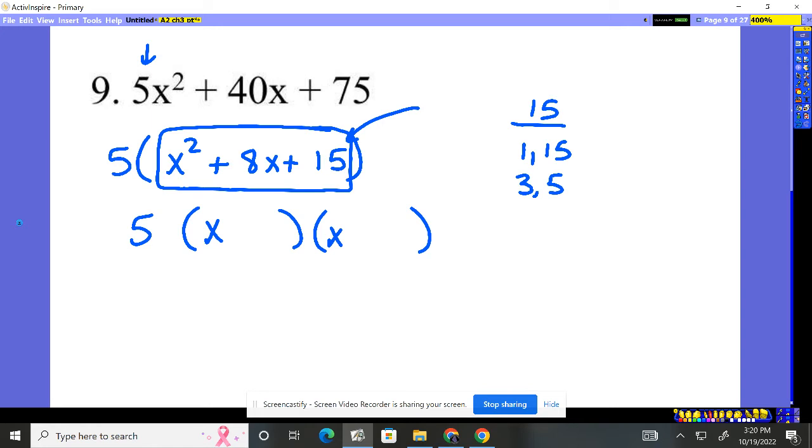I need them to add together to be 8. That means we're using the 3 and the 5. They're both positive because this is positive. So it's going to be plus 3 plus 5. So we have 5 times x plus 3 times x plus 5.